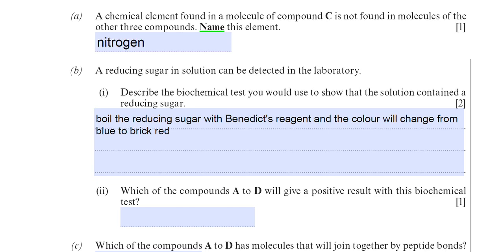Benedict's reagent can turn other colours besides brick red. Brick red normally indicates a high concentration of reducing sugar. The reagent can go through a range of colour changes: green, yellow, orange, and then brick red. The mark scheme allows any of those colours as a correct answer, so blue to green, blue to yellow, or blue to orange would also get the mark.